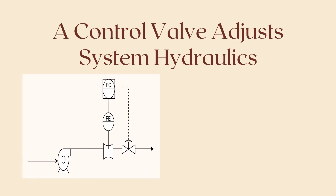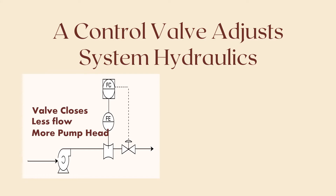The control valve doesn't just act as a final control element, but also adjusts the system hydraulics. Here for example, the control valve acts to adjust the operating point in the pump performance curve, and shifts the system curve to intersect with the pump performance curve, so that we can get the operating point we need.